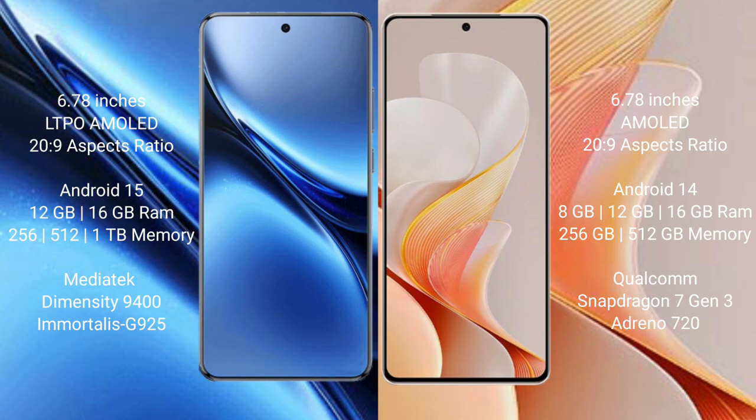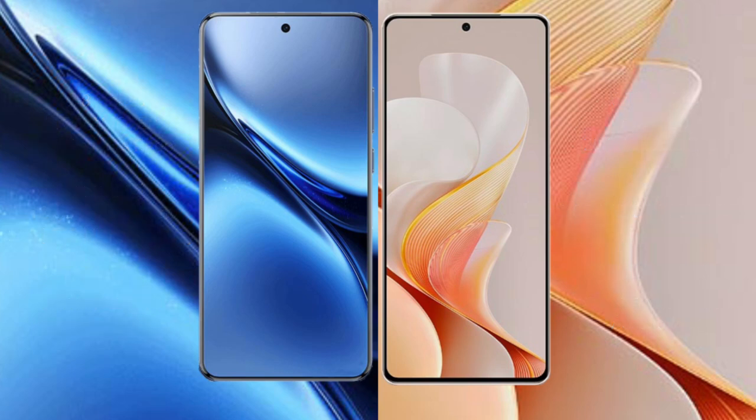Vivo X19 comes with 8GB, 12GB, or 16GB RAM, and 256GB or 512GB internal storage. It is powered by the Qualcomm Snapdragon 7 Gen 3 processor with GPU Adreno 720.